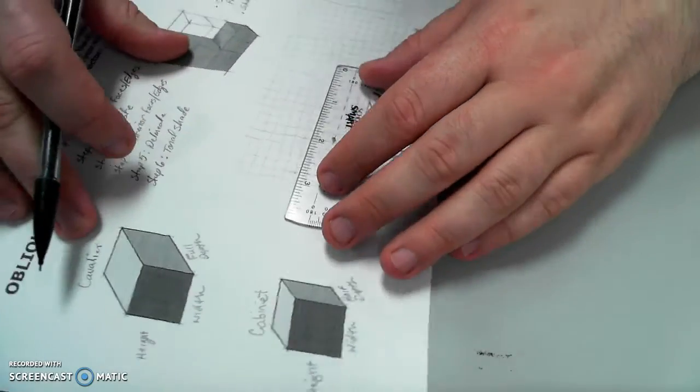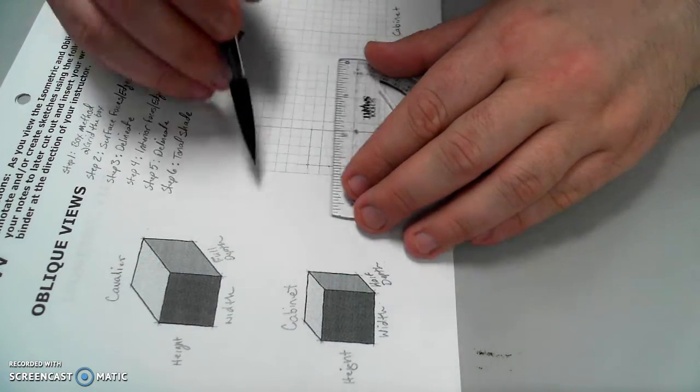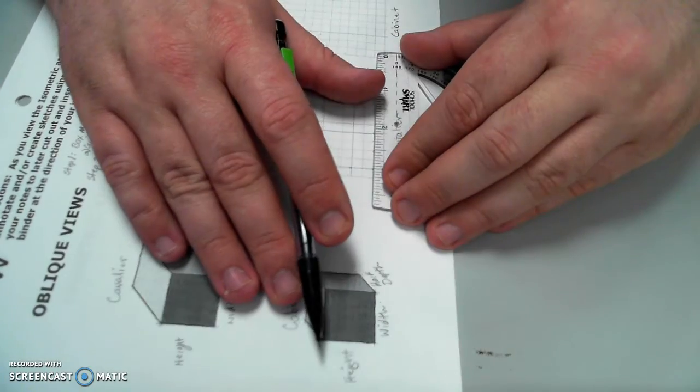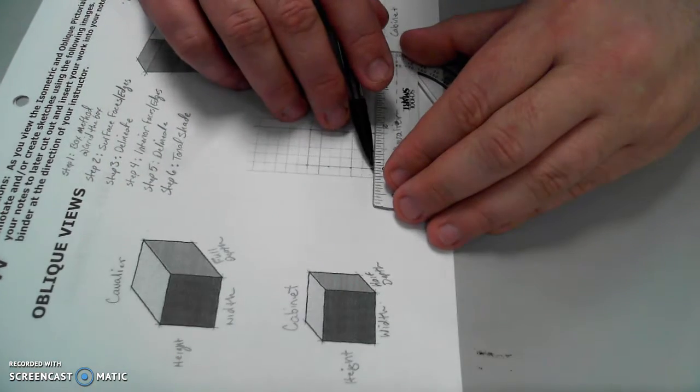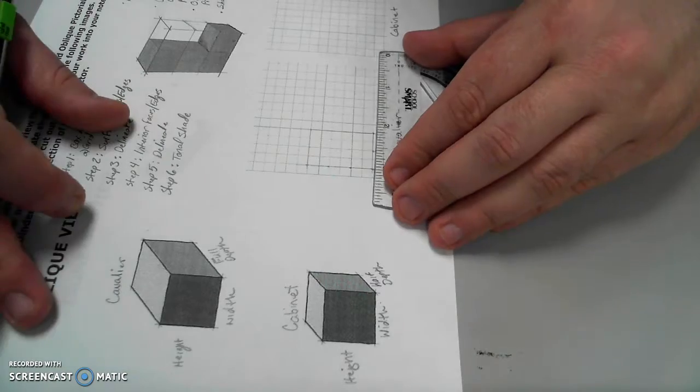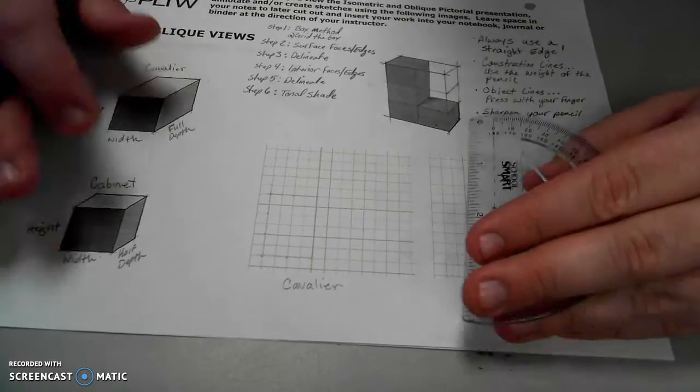The lines should be so light that I can barely see them. They are, after all, just a construction line. The lighter they are, and notice how I hold the pencil, the easier it is to erase them as well as to delineate them when I want to darken them in.